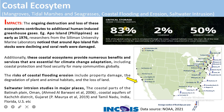Looking at the numbers: globally, the coverage of coastal ecosystems — mangroves, tidal marshes, and seagrass — represents only 2% of the whole ocean area. Yet, of the 83% global carbon stored in oceans, 50% is stored by this coastal ecosystem. This highlights how critically important it is to restore and protect these coastal ecosystems that store the excess carbon we release into the atmosphere.